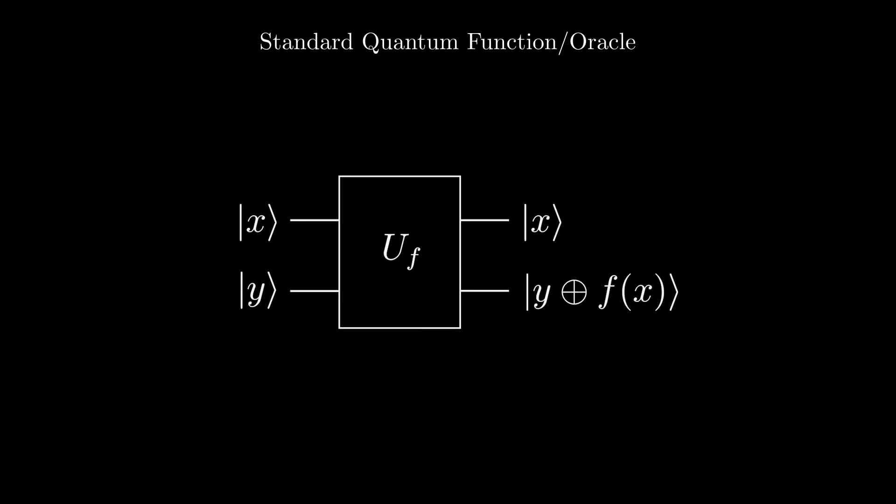A standard quantum function looks like this where we input x and y and get back x and y exclusive OR with f of x. Now you might be thinking, how are we going to get the output if it is exclusive OR with y?